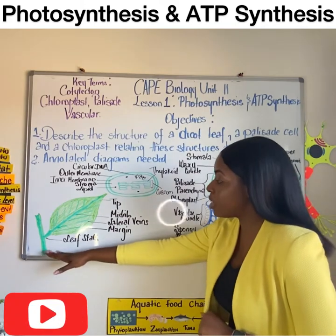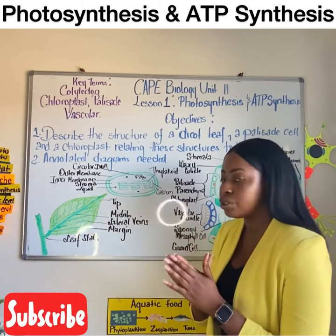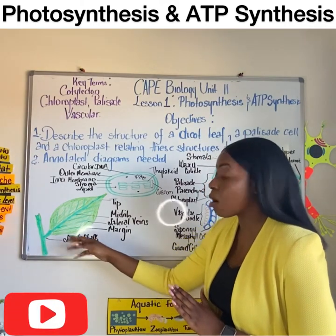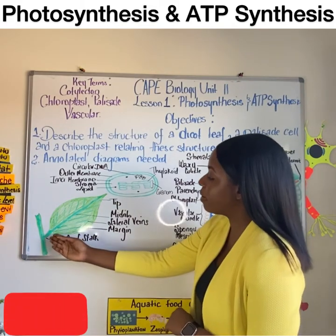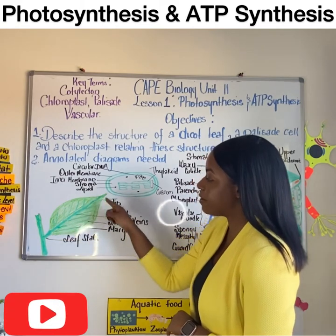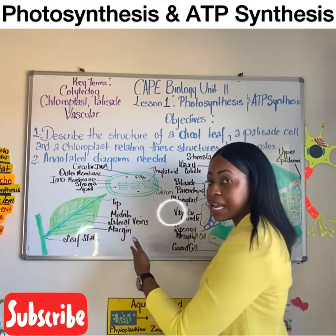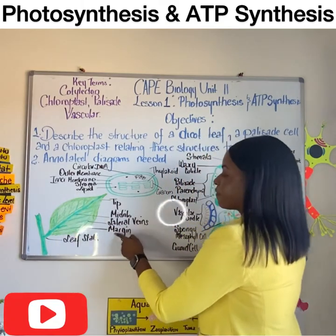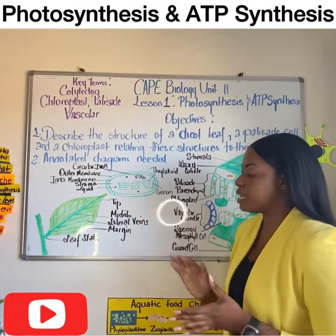So the external anatomy of the dicot leaf: a typical dicot leaf is not immediately attached to the stem; it is separated from the stem by the leaf stalk or petiole. Dicots have a central mid-rib, or central vein, that runs from the base to the tip of the leaf. The mid-rib also branches off into lateral veins, and the edge of the leaf is called the leaf margin.